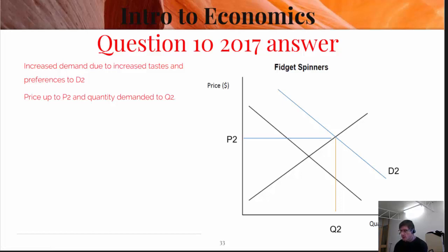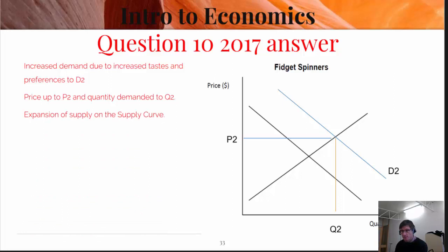Importantly with all questions, especially in this particular section, you use graphs, tables and diagrams as much as possible. You should also say, to complete your question, there's been expansion of supply along here, which has led to the increase in quantity demanded.